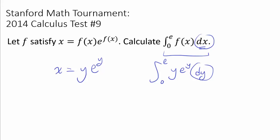We know how to integrate this with respect to y. So if we have our function f drawn something like this, we know how to find the area between the function and the y-axis. We know how to find that area — that's this region. But that's not what we want to find. We want to find the area under the curve with respect to x.